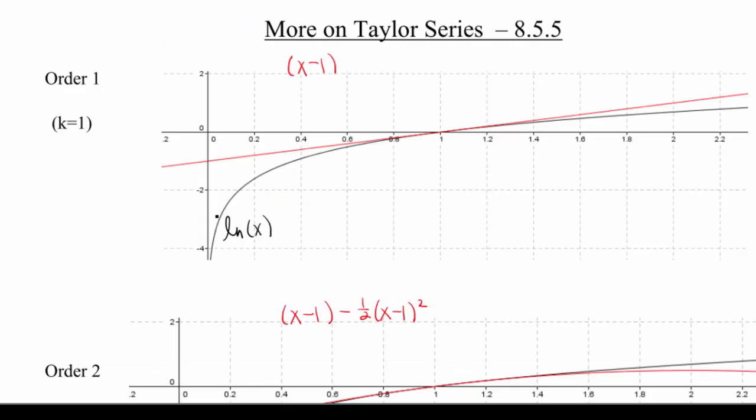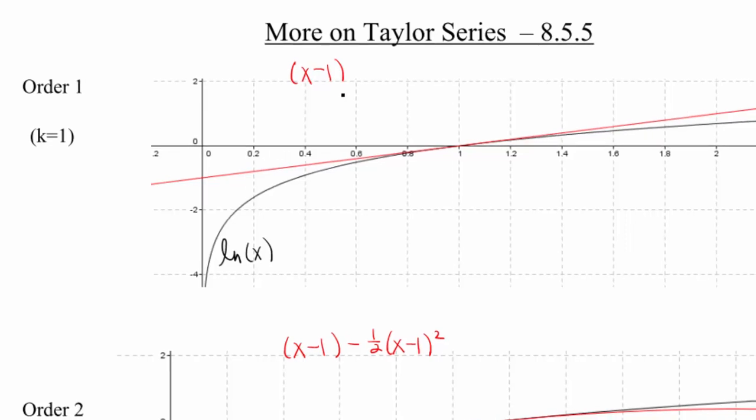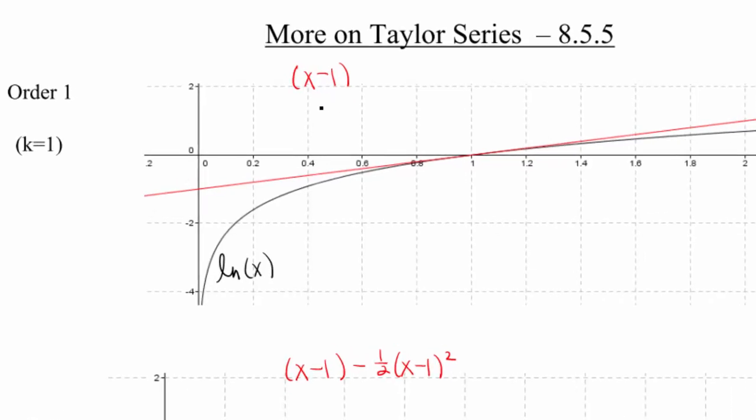Okay, so where we left off last time is we decided that the Taylor series for the natural log of x is going to follow a certain pattern. When k is 1, that's called an order 1 Taylor series. We end up getting the line, as it turns out, of x minus 1. Now our Taylor series is centered at 1.